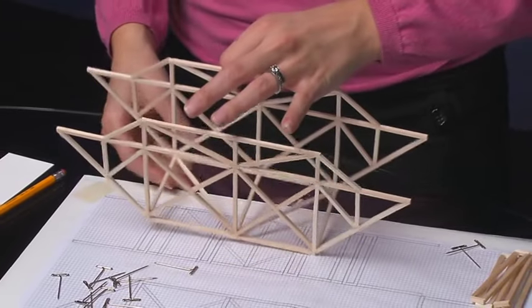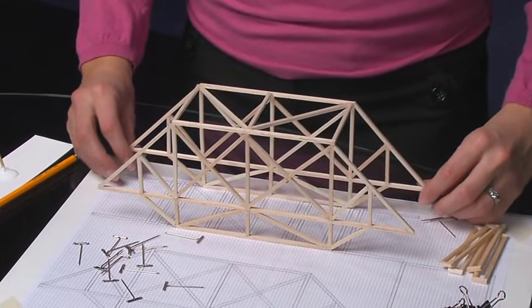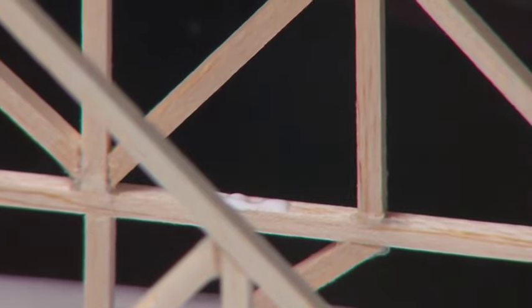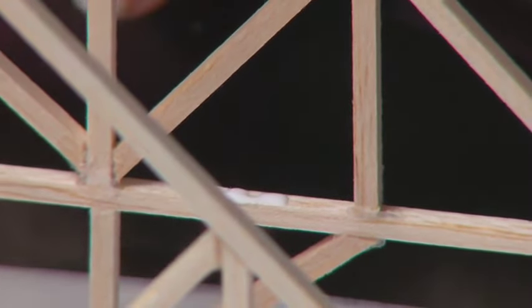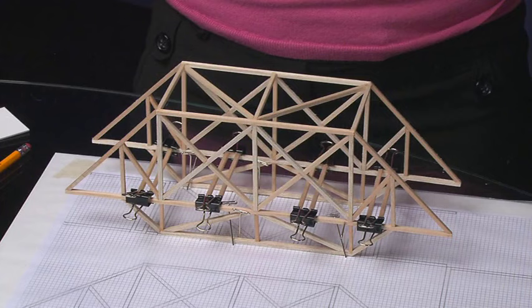After the glue is dry, pull out the pins and carefully remove the bridge from the work surface. Turn it over and, if necessary, pin the bottom of the bridge to hold it in place. Apply glue to the sides where the roadway cross braces will be attached. Put the cross braces in place and, if needed, position the braces in place with paper clamps while they dry.